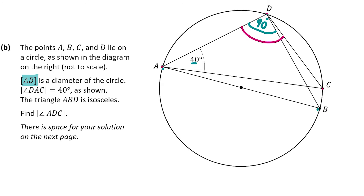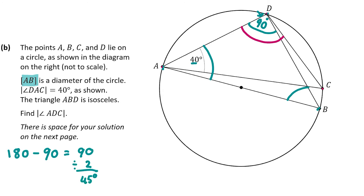We're also told that angle DAC is 40 degrees. Triangle ABD is isosceles, which means the angles at A and B are equal. There are 180 degrees in a triangle; take away 90 degrees and you're left with 90, divided equally between A and B — so each is 45 degrees. Since the angle at A in the triangle is 45 degrees and DAC is 40 degrees, the remaining angle at A must be 5 degrees.